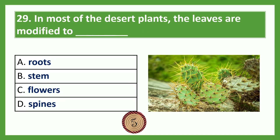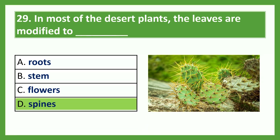In most desert plants, the leaves are modified to — Option A: roots; Option B: stem; Option C: flowers; Option D: spines. The answer is Option D, spines. In the picture, we can see the cactus plant in which the leaves are modified to spines.